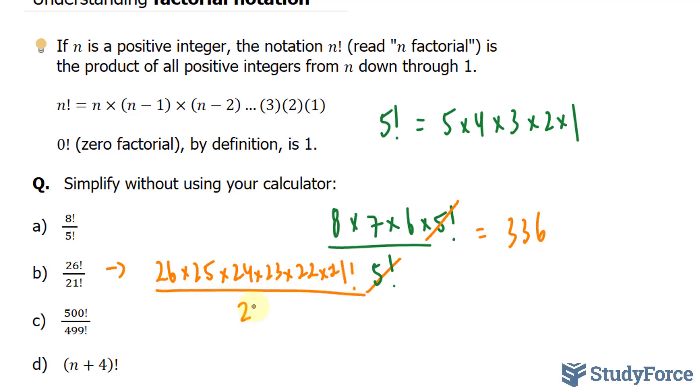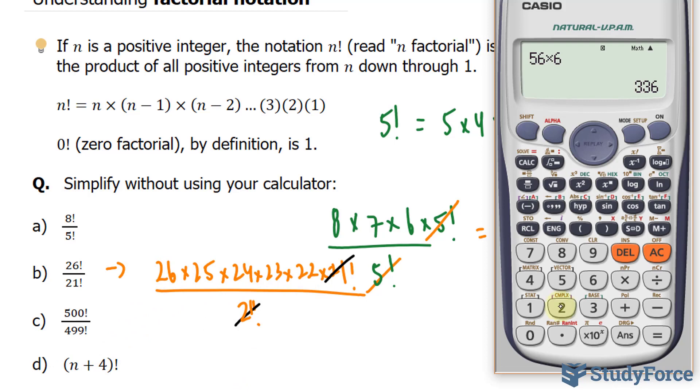And this 21 factorial will cancel out with the bottom one. And now we multiply 26 all the way through 22. 26 times 25 times 24 times 23 times 22 gives us a total of approximately 7.8 million.